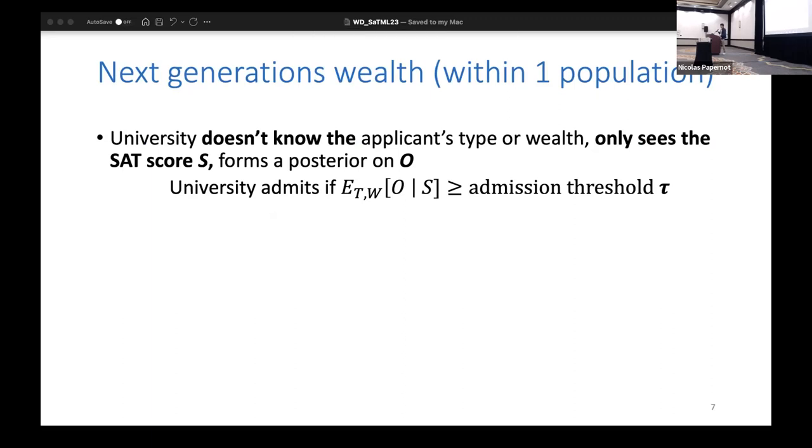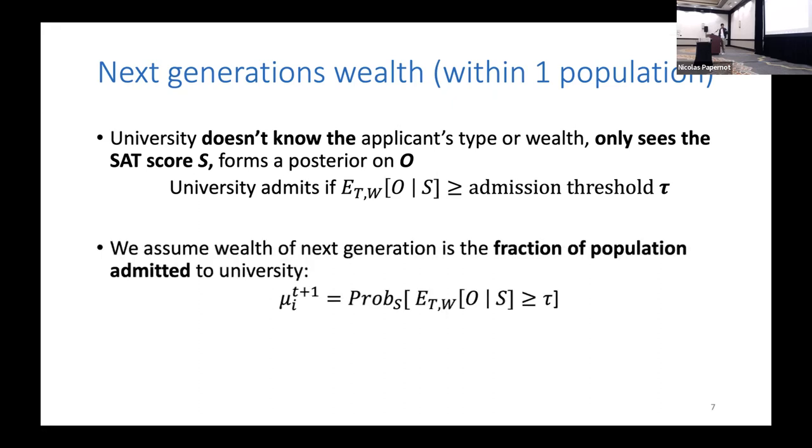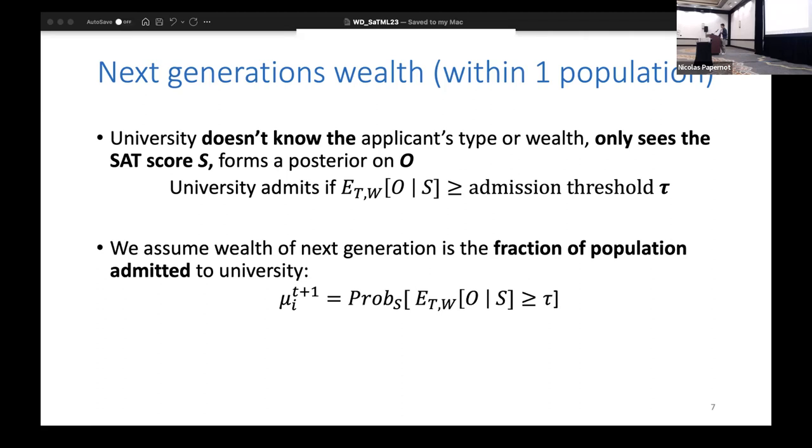Based on this, you must form a posterior on the value of the objective. This conditional expectation of the objective, if it's greater than the admission threshold τ that the university sets, admits the candidate. This defines the admission rule. Under this admission rule you can calculate what fraction of the population you are going to admit. The intuition here is that if you admit a greater fraction of the population, that population's wealth rises, captured by μᵢ(t+1).